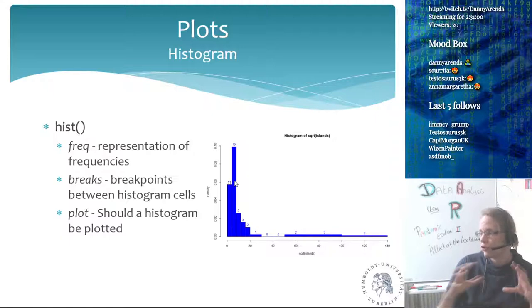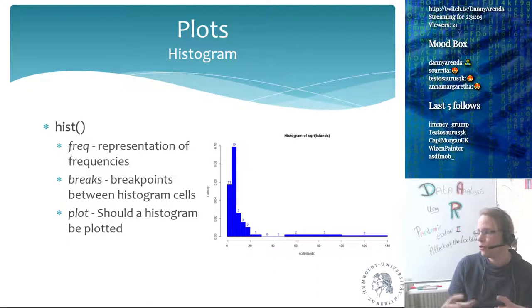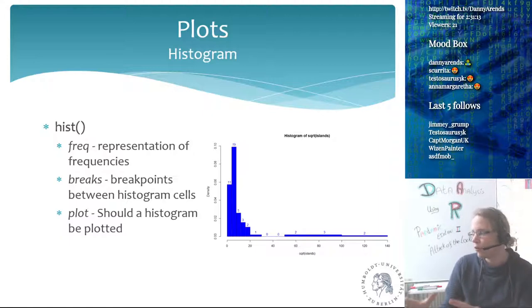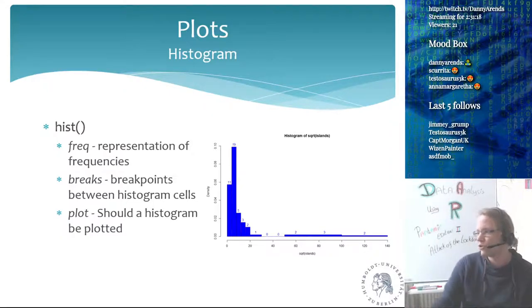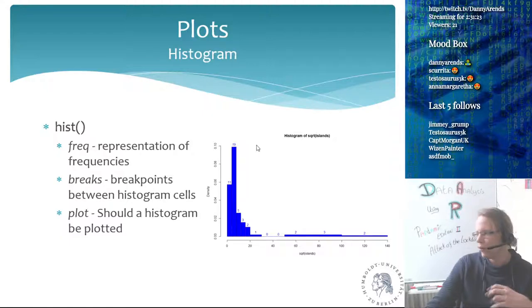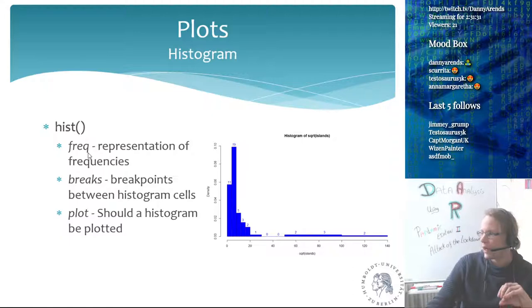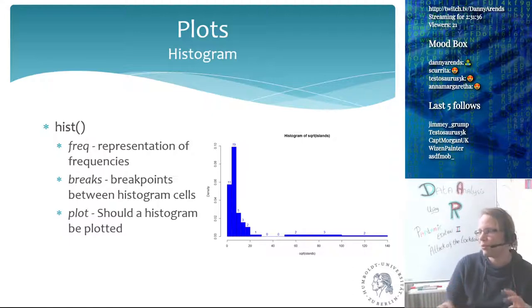If you want to compare two groups with very different numbers of observations, you want to use density rather than frequency. Otherwise, if one group has 1,000 measurements and another only 50, the larger group will dominate visually. By setting it to density, you can fairly compare two groups with a big difference in observation count.